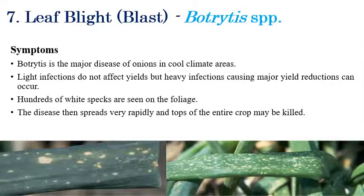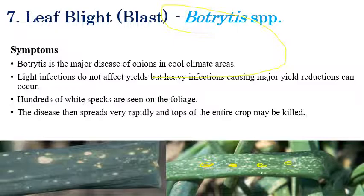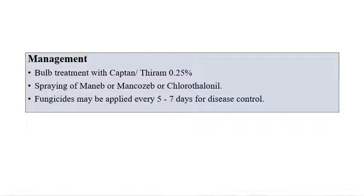The next disease is Leaf Blight or Blast, caused by Botrytis species. This blight is mostly seen in cooler climate areas. A severe infection can have a great impact on yield. Numerous small specks are initially seen on the foliage — hundreds of small white specks — which coalesce in later stages to form big spots. The disease spreads rapidly to the entire crop area and the entire crop may be killed in later stages. For management: bulb treatment with Captan or Thiram at 0.25 percent, along with spraying Mancozeb, Metiram, or Chlorothalonil every five to seven days for effective disease control.